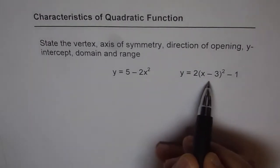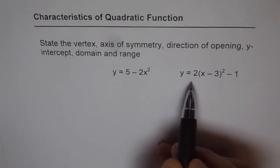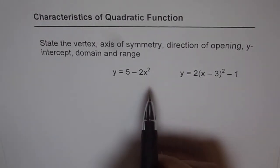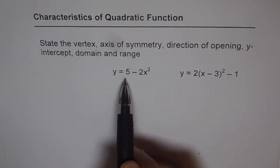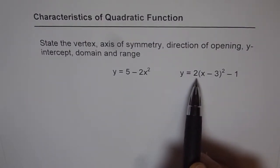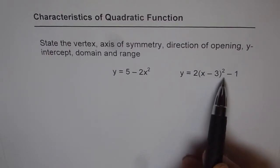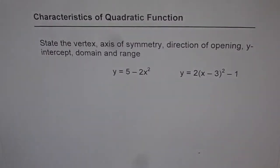We are given two functions here and both of them are in vertex form. This one is y equals 5 minus 2x square. The other one is y equals 2 times x minus 3 whole square minus 1. Now let us see how to write all the characteristics from the given equation.